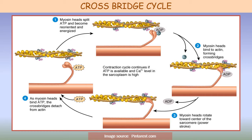Now let us look into the cross bridge cycle. The process of contraction involves a cyclic interaction between the thick and thin filaments, which is called the cross bridge cycle. Thin filaments slide over the thick filaments during a muscle contraction. Step one: myosin heads split ATP and become reoriented and energized, due to the intrinsic ATPase activity of the myosin head.